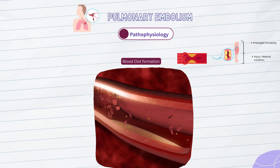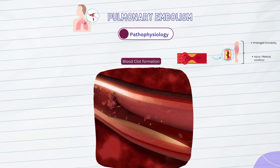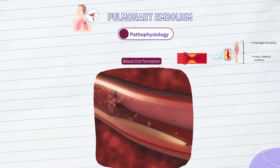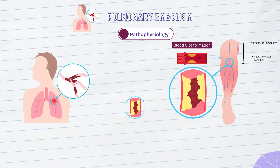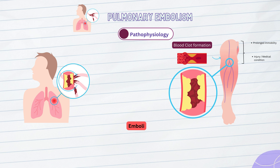This clot can grow in size, especially if there are abnormalities in the blood's ability to prevent excessive clotting or dissolve clots. When a blood clot develops in the deep veins, it has the potential to become dislodged and move through the bloodstream. We refer to these blood clots as emboli. A pulmonary embolism can result from an embolus that blocks one of the pulmonary arteries after it reaches the lungs.